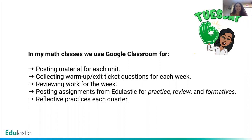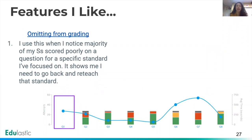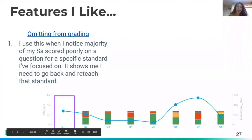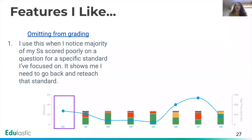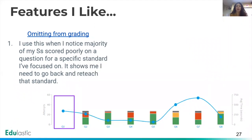Moving to the next slide, I'll show you what I really like about Edulastic. This is one of the features I started playing with at the beginning of the school year: omitting from grading. Let's say you created an assessment, gave it, looked at your data, and noticed there's one question really affecting your scores. As you can see on the screen on question one, the bar disappeared — that's because I omitted that specific question from grading. There's a hyperlink in the presentation where I walk you through how to actually do the omitting.